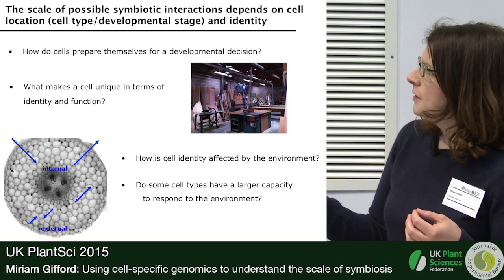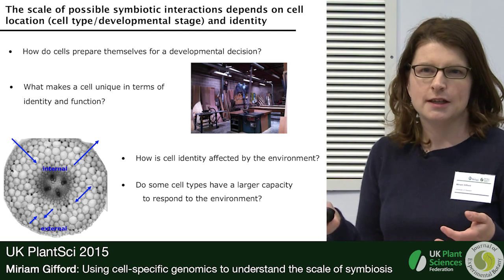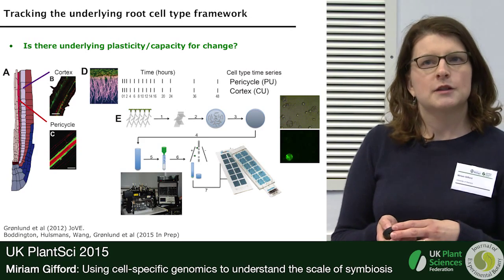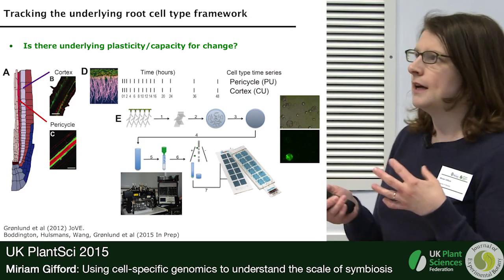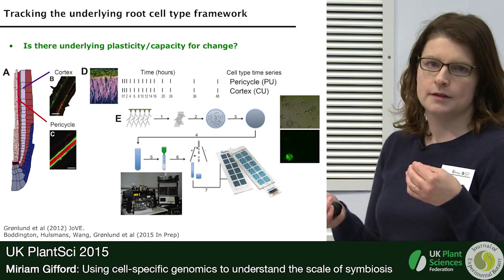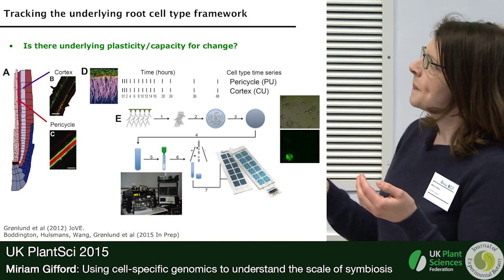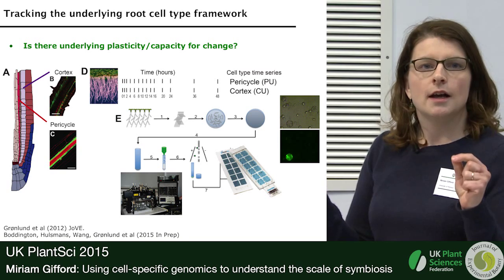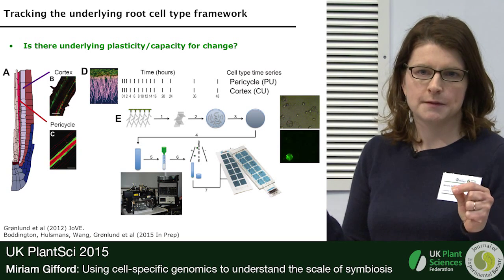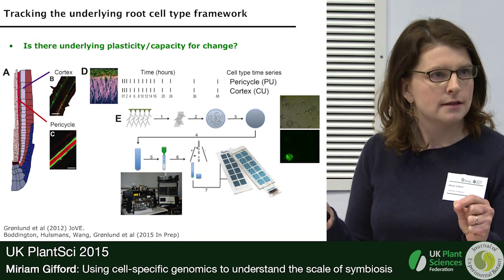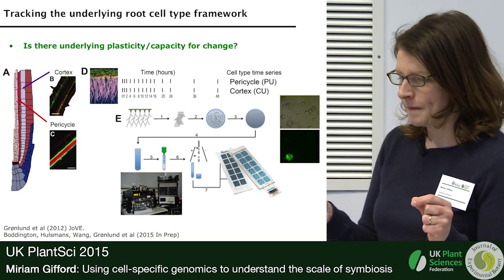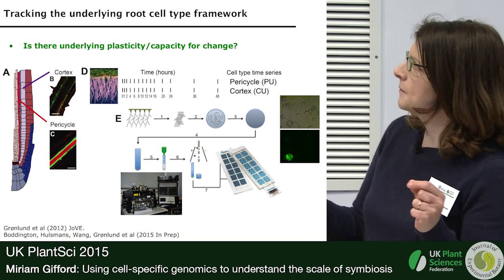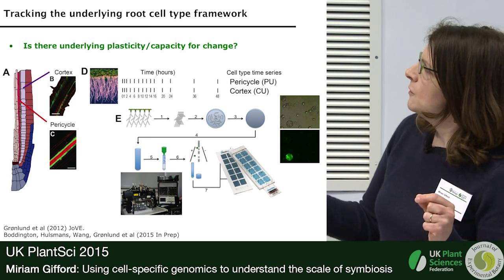We want to know: do some cell types have a larger capacity to respond to the environment? To explore this, we've been using analysis in the reference species Arabidopsis. We carry out time series experiments and harvest single cell types to look at how different cells change over time. We use fluorescence-activated cell sorting to do this, and you can see our pipeline of work here.